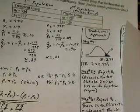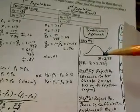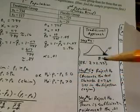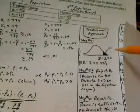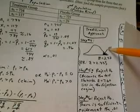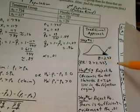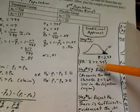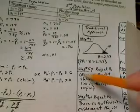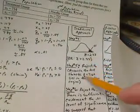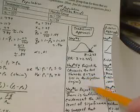In step 4, using the traditional approach, we calculate the rejection region. Based on the alternative hypothesis with a greater-than sign, this is a one-tailed test to the right. All of the level of significance, 0.01, goes into that tail. Looking up 0.01 in the body of the Z-table gives 2.33, so the rejection region is Z > 2.33. In step 5, our test statistic of 7.60 lies in that rejection region, so we reject the null hypothesis.